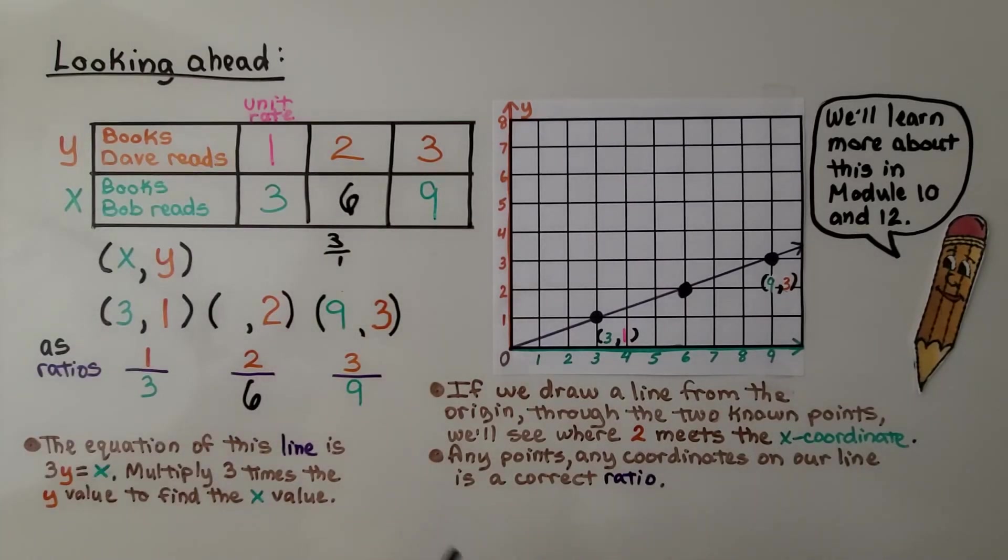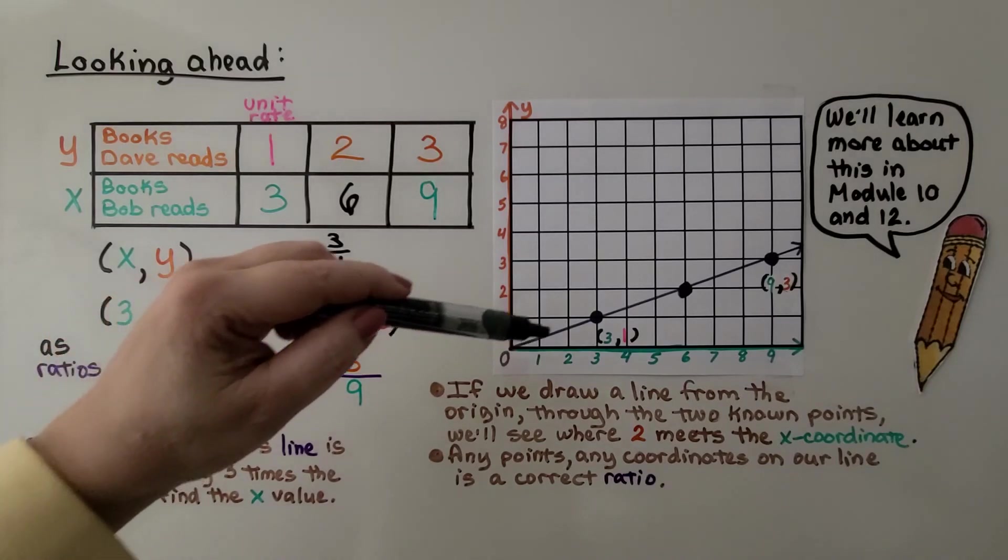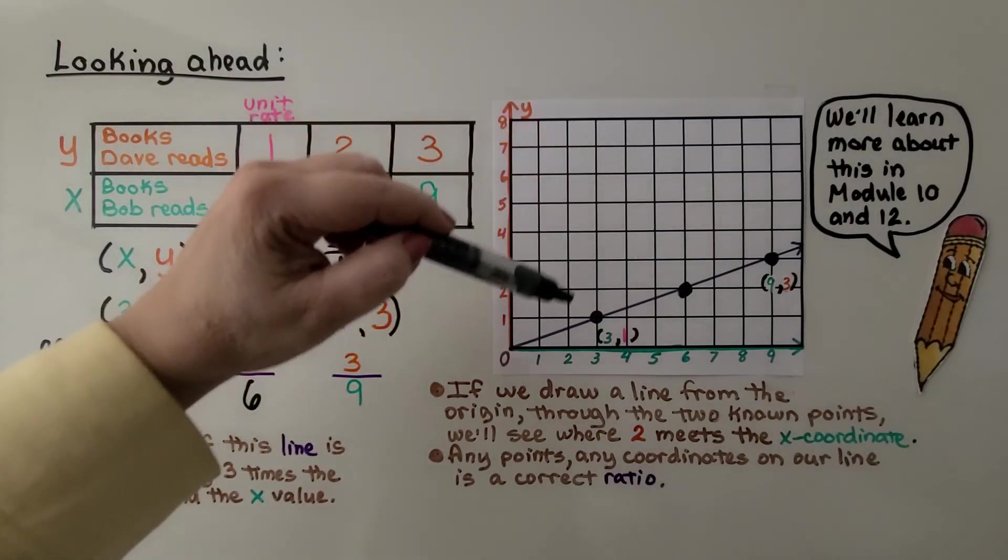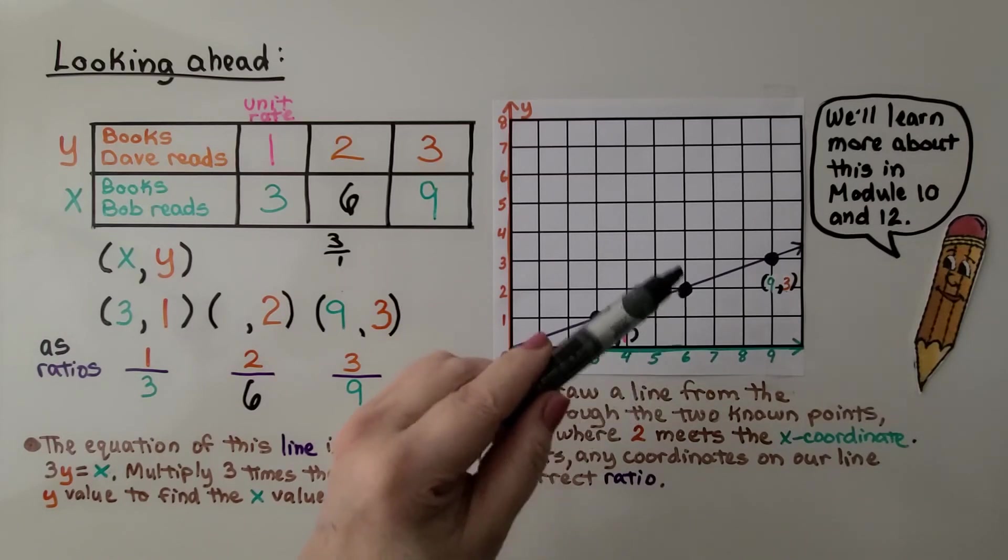Any points, any coordinates on our line is a correct ratio. So if we draw a line from the origin through the two known points, we'll see where 2 meets the x coordinate. And it met at 6.